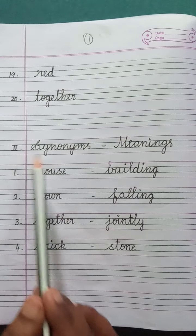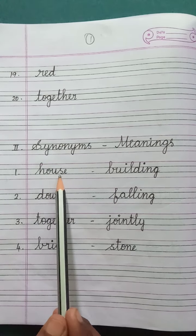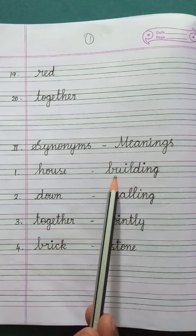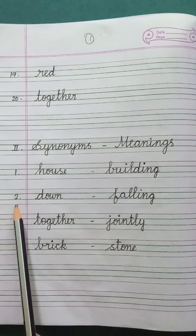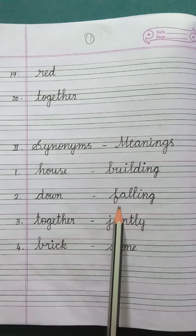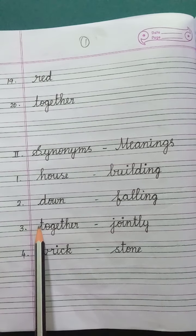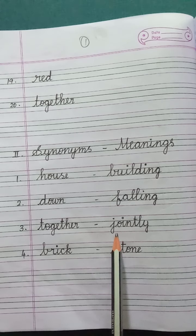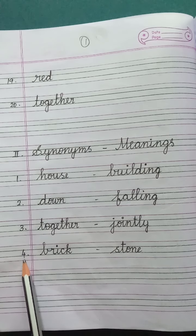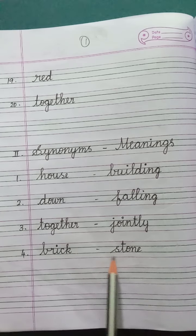Come to Roman Letter 2, Synonyms. Synonyms means meanings. Number 1: House — the synonym for house is Building. B-U-I-L-D-I-N-G, Building. Number 2: Down — the meaning for down is Falling. F-A-L-L-I-N-G, Falling. Number 3: Together — the meaning of together is Jointly. J-O-I-N-T-L-Y, Jointly. Number 4: Brick — the meaning for brick is Stone. S-T-O-N-E, Stone.